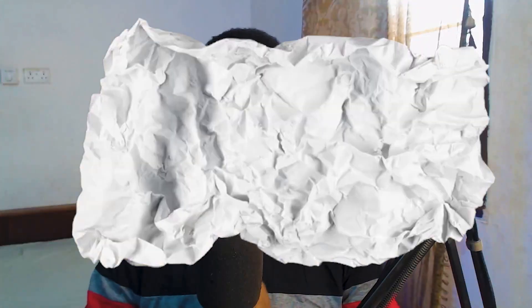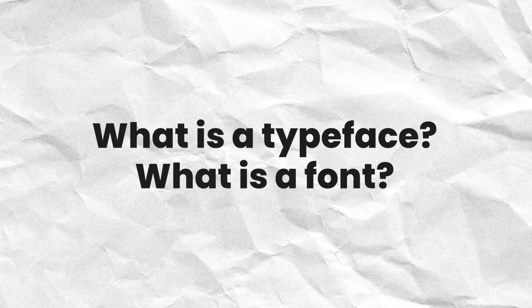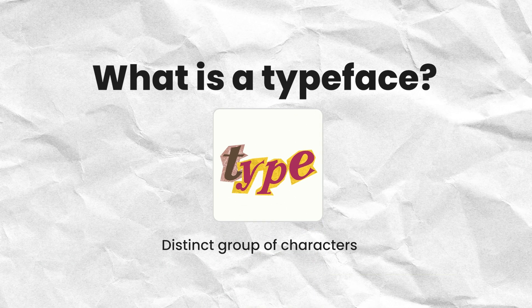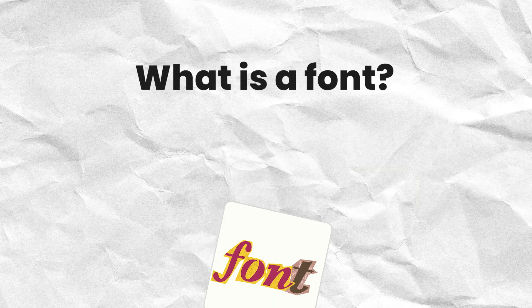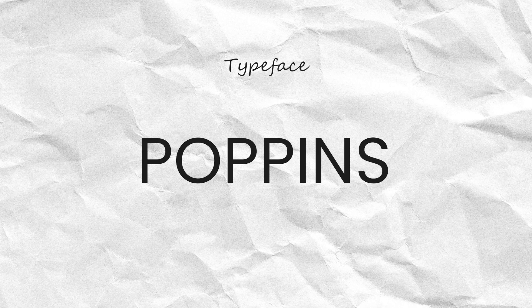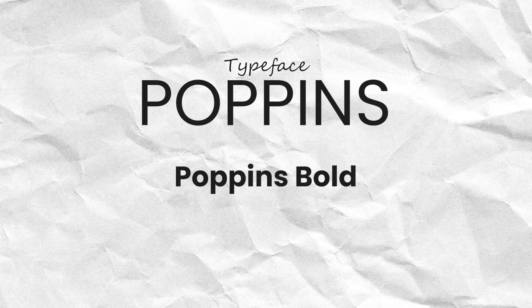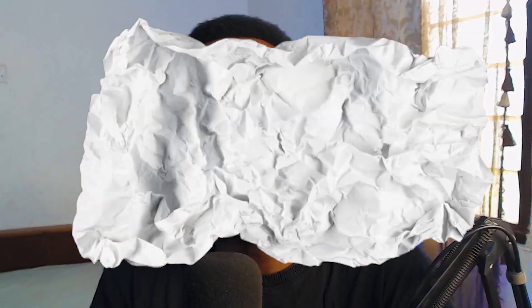The first thing to understand is the difference between a typeface and a font. A typeface is a distinct group of characters with a particular style, and a font is a variation within the typeface. For example, Poppins is the name of a typeface, but Poppins Bold is the name of a font. Broadly speaking, the typeface is the parent and the font is the child.